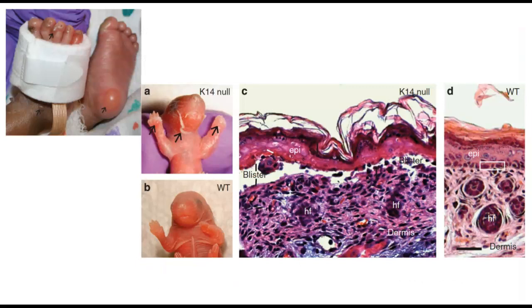This is what we see in a number of inherited genetic diseases collectively called blistering skin diseases. We can see the feet of an infant born with EBS — notice the large fluid-filled blister. There is also an animal model in which keratin-14 can be knocked out; animals carrying this mutation develop blisters which are absent in wild-type. At the level of bright-field microscopy, in the K14 null the skin is pulling off from the underlying dermis and fluid-filled blisters are forming, in contrast to the wild-type where the epidermis and dermis are held close together.